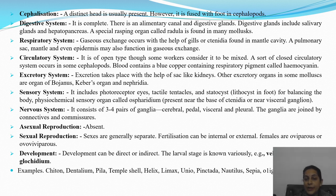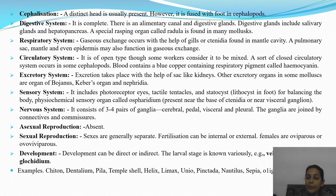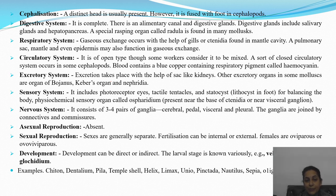Circulatory system is open type — some workers consider it mixed type. Closed circulatory system is also present in cephalopods. Blood has a blue-colored pigment, haemocyanin — similar to our red iron-containing pigment haemoglobin. Excretion occurs with the help of sac-like kidneys; Bojanus organs, Keber's organs, or nephridia are also present.